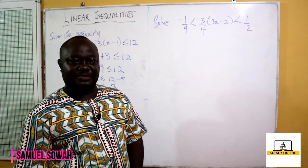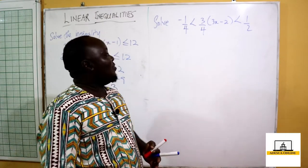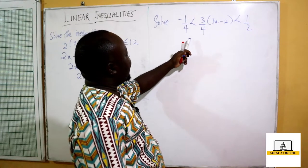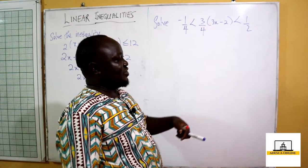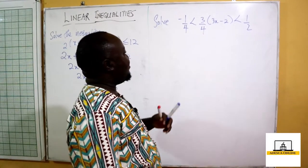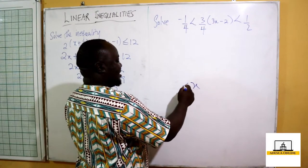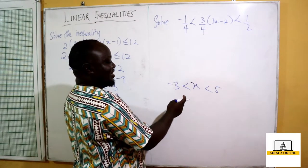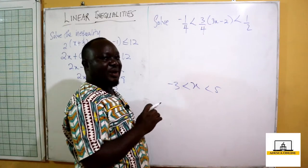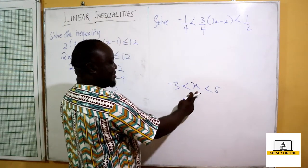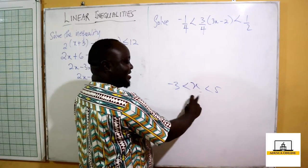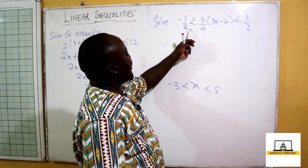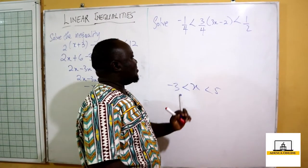In our second example we have 3/4 into 3x minus 2 is greater than negative 1/4 and less than 1/2. This is how we read this type of question. If I give you x in the middle with negative 3 and positive 5, you mention the variable x first — x is greater than negative 3 and less than 5. The same way, 3/4 into 3x minus 2 is greater than negative 1/4 and less than 1/2, and we are going to solve this inequality.